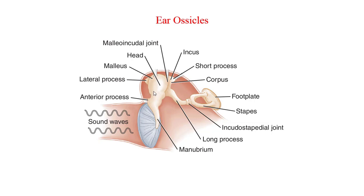These ossicular chains of three articulated bones provide the means for transmission of acoustic energy impinging on the tympanic membrane to the inner ear. The malleus is the largest of the ossicles, providing the point of attachment with the tympanic membrane. The manubrium or handle of the malleus is a long process separated from the head by a thin neck. The anterior and lateral processes provide points of attachment for ligaments. The manubrium attaches to the tympanic membrane along its length, terminating with the lateral process.